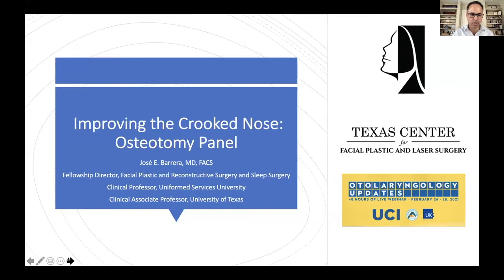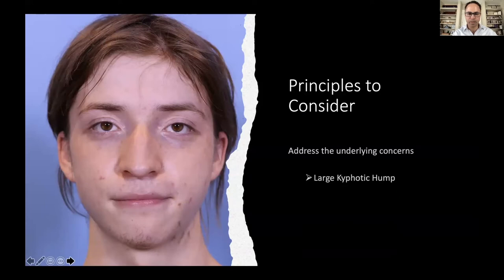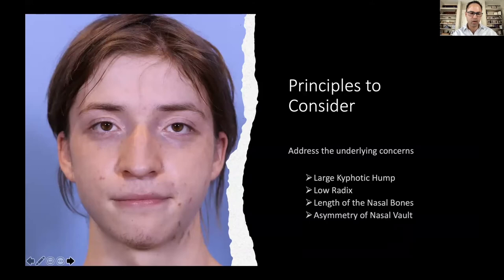Disclosure: I'm a speaker and grant recipient with Stryker, which has nothing to do with this presentation. Here's our patient. Some principles to consider: the patient presents with a large kyphotic hump, has a low radix, really short nasal bones, and asymmetry of the nasal vault. So Brian, Oren — what would you do?